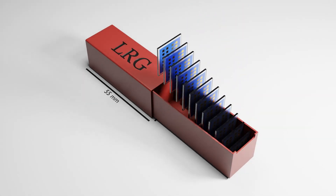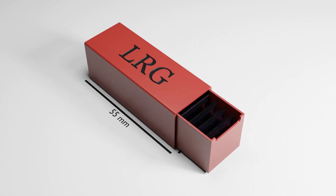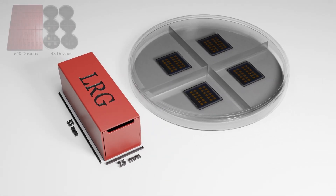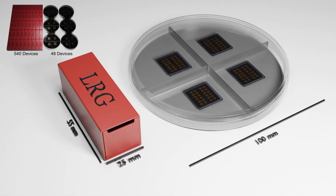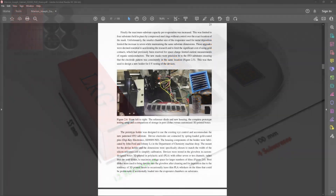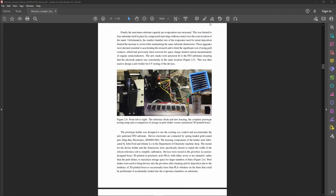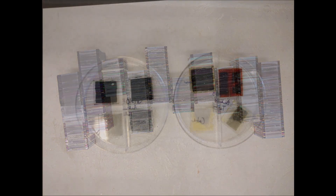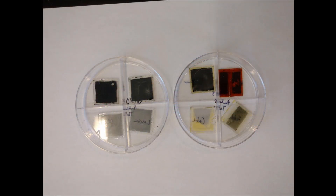During my PhD, I worked with thin film devices — mine were solar cells. In my current job, the group works with transistors and capacitors, but this design would be useful for OLEDs or really any thin film, microscope slide, or even coverslips. All of these, or at least the ones I worked with, were typically made from ITO coated glass slides or chips cut directly from silicon wafers.